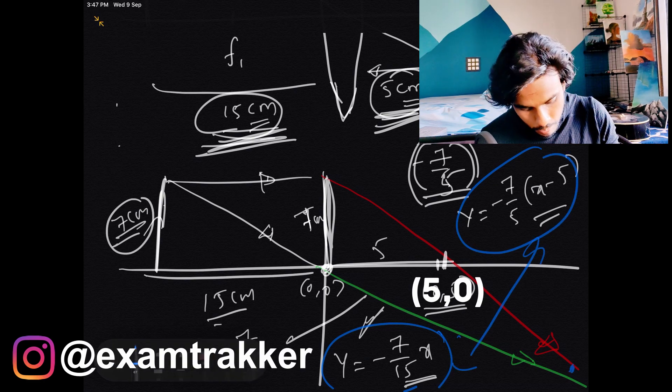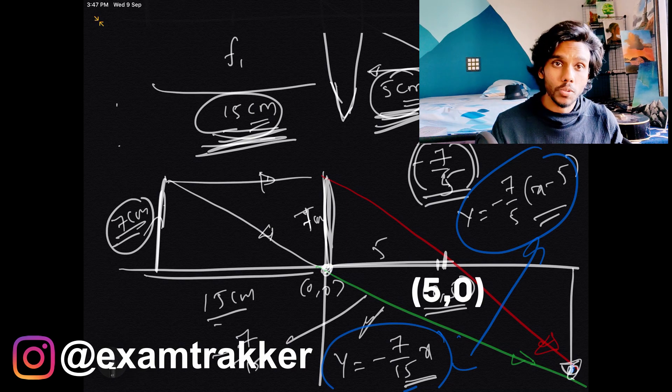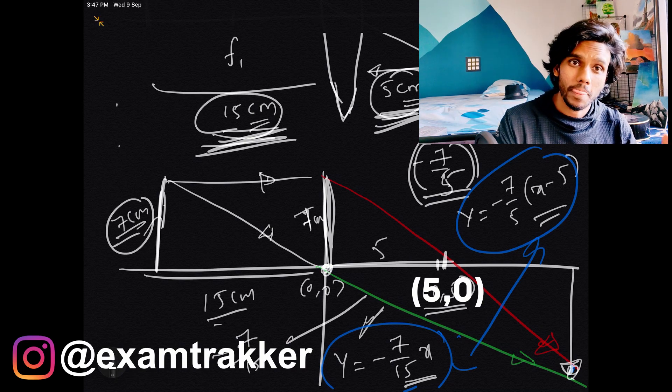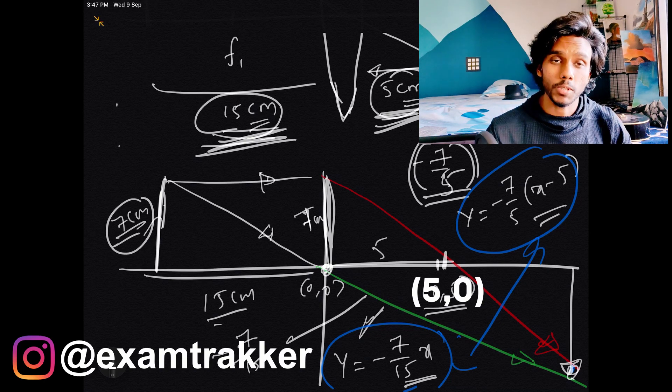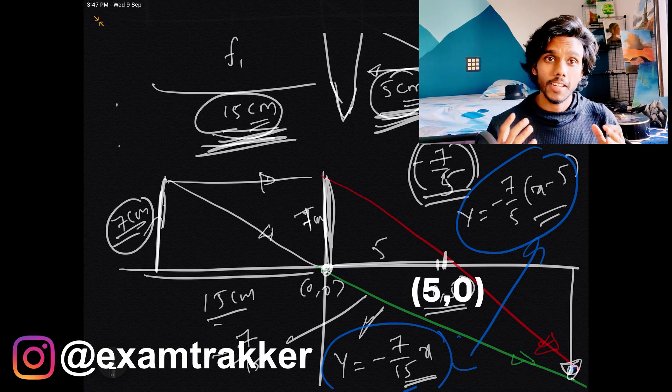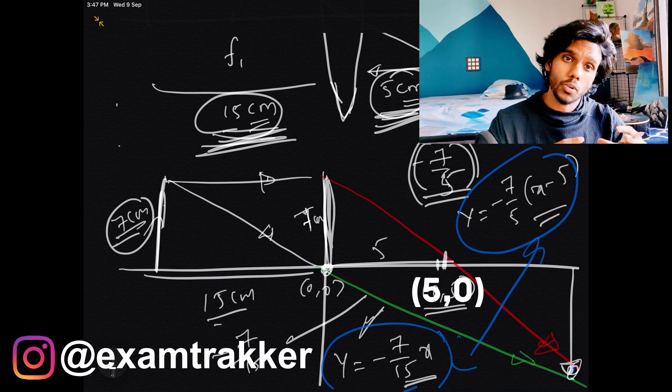You get the point of intersection, and the point of intersection clearly gives you the position of the image. Not just the position of image, the height of the image can also immediately be solved. You see what happened there? Without even using the idea of ray optics, we solved using coordinate geometry. That's one more idea for you to approach the problem in a different manner.